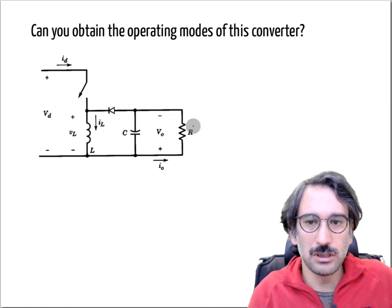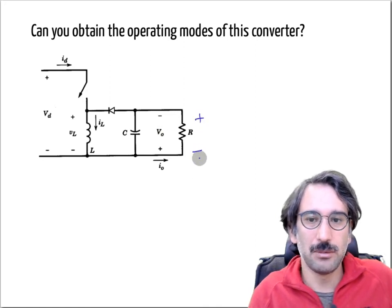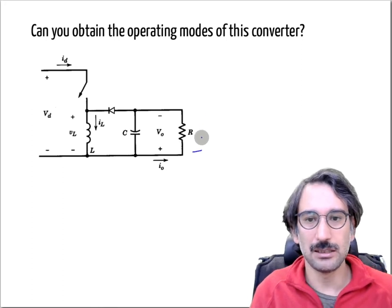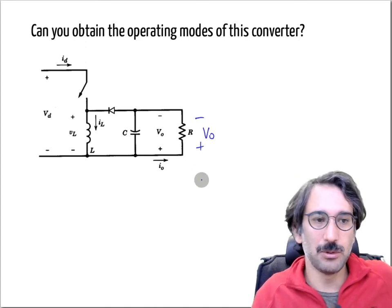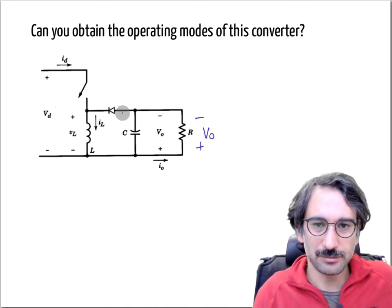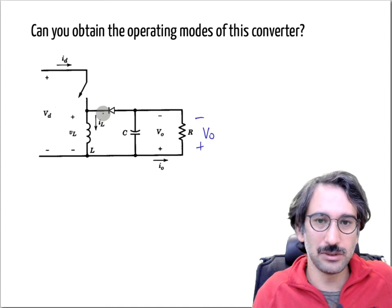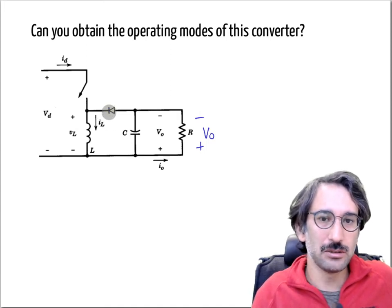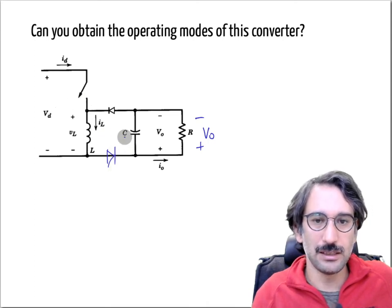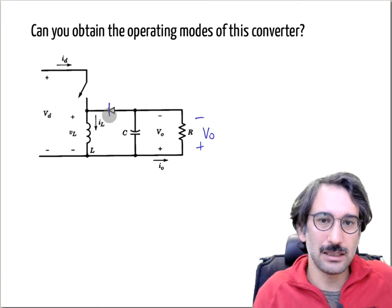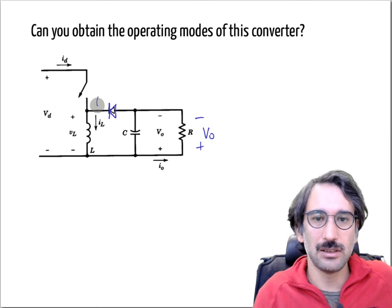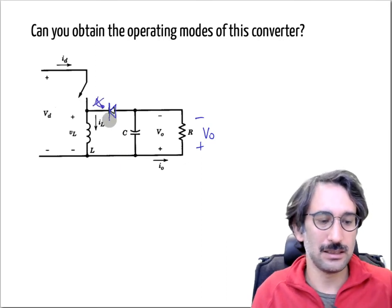The output voltage is not defined in the usual way with minus and positive, but instead it is defined in reverse polarity. Also, the orientation of the diode is not directly as in the boost converter — it is in the upper branch but with reverse orientation, so the current cannot flow in that direction.